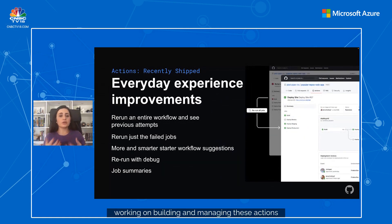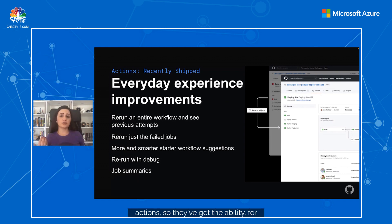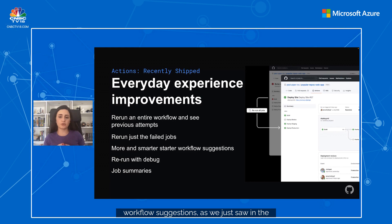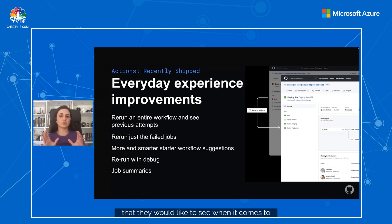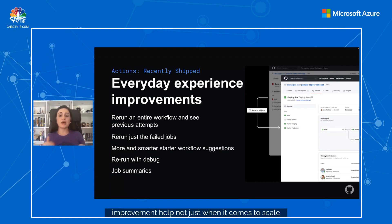For the developers who are building and managing these actions, we've been working on a better experience for them. They now have the ability to rerun a workflow and see previous attempts, or rerun just the failed portions of a workflow. They get better workflow suggestions when creating or altering their actions workflows, as well as new debugging capabilities to help them troubleshoot. And for the job summary view, developers can now customize the report they would like to see — all of these experience improvements help not just with scale but also for the administration side of Actions.